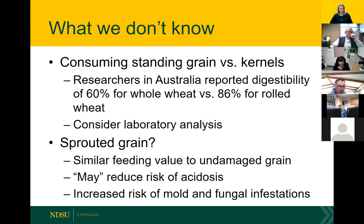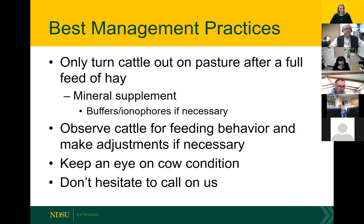Joel mentioned sprouted grain — there are really no differences in sprouted versus undamaged grain in terms of feeding value. A great deal of starch is used up in the plant to produce a seedling, so this may help reduce the risk of acidosis, but we can't say it's completely eliminated. The other challenge is dealing with increased risk of mold, mycotoxins, ergot, and other potential contaminants in the field. Don't turn hungry cows out on wheat pasture. Provide a mineral supplement — wheat straw and wheat grain are both low in calcium and deficient in trace minerals such as zinc, especially important for pregnant cows.